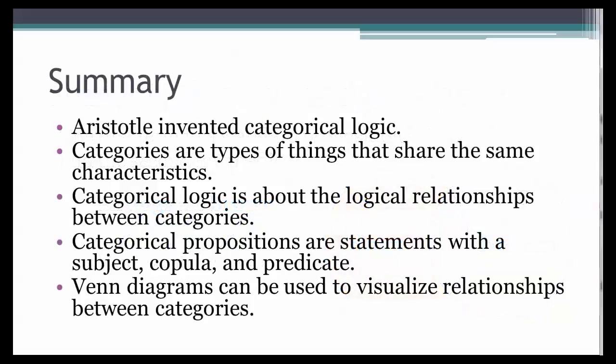In summary, Aristotle invented categorical logic. Categories are types of things that share the same characteristics. Categorical logic is about the logical relationships between categories. Categorical propositions are statements with a subject, copula, and predicate. Venn diagrams can be used to visualize relationships between categories.